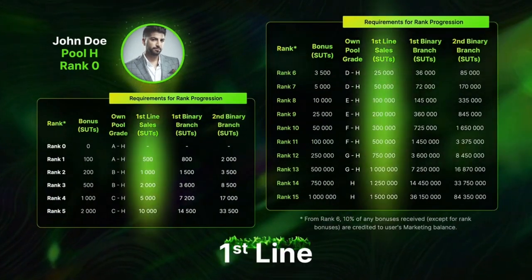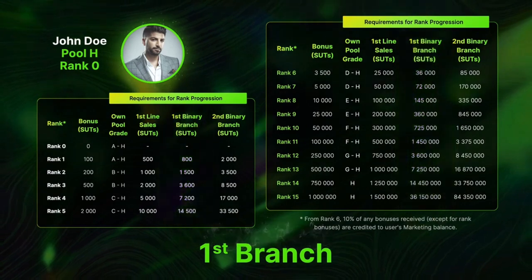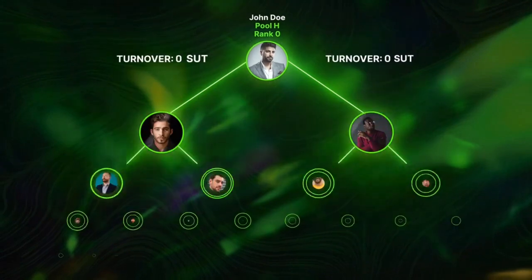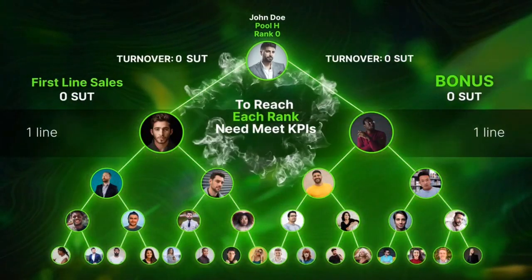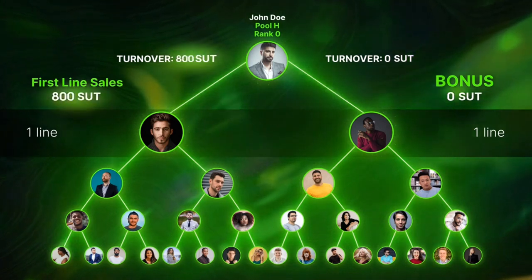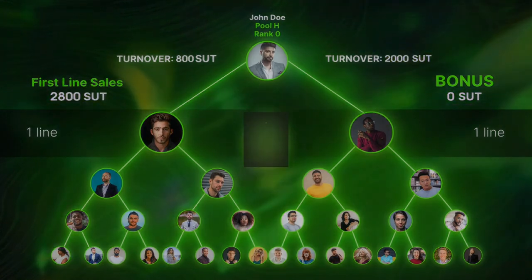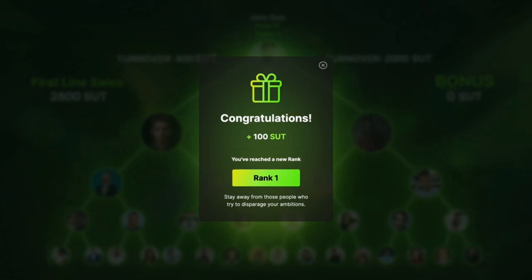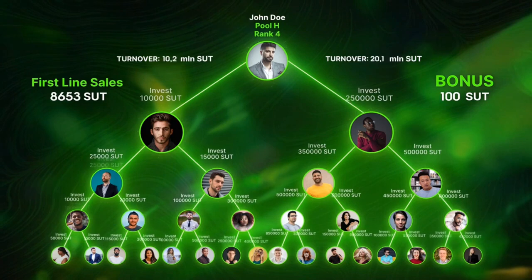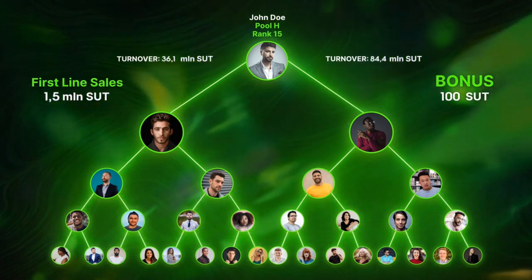The Zayndex Rank System allows platform users to receive personal rank bonuses by meeting the KPIs of affiliate network development. KPIs consider your liquidity pool with the highest grade, first-line sales, and turnover on the right and left binary sides. By reaching each rank, the user receives a bonus of 100 to 1 million SUT. It's worth noting that binary spillover is not considered in rank statistics calculation.